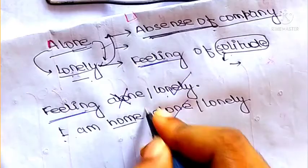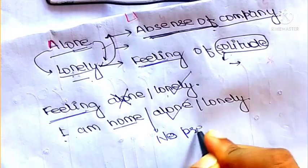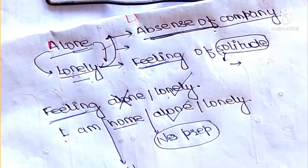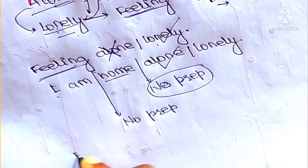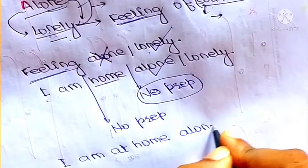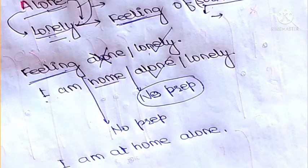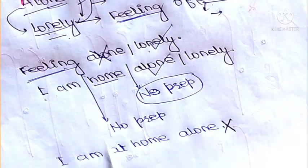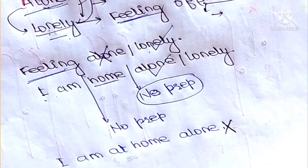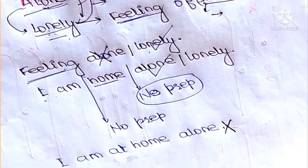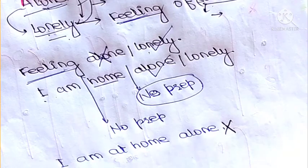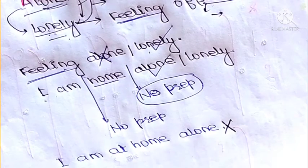One thing to keep in mind: no preposition should be used with 'alone.' For example, 'I am at home alone' is incorrect. The correct form is 'I am home alone.' I hope you understand the difference between 'alone' and 'lonely.' Although both words seem similar, their usage is different. Thank you for watching — if you found the content helpful, please like and subscribe, and do visit the other videos on this channel.